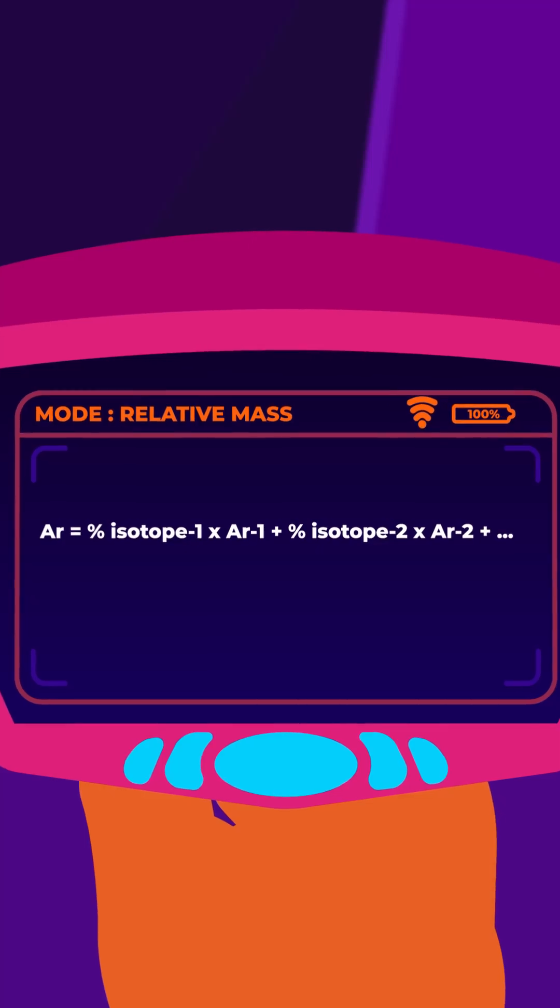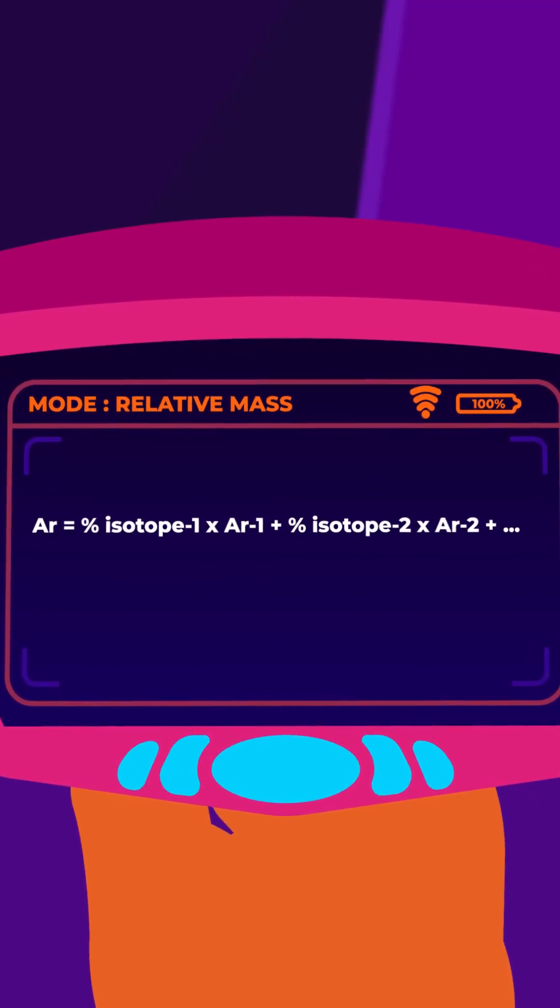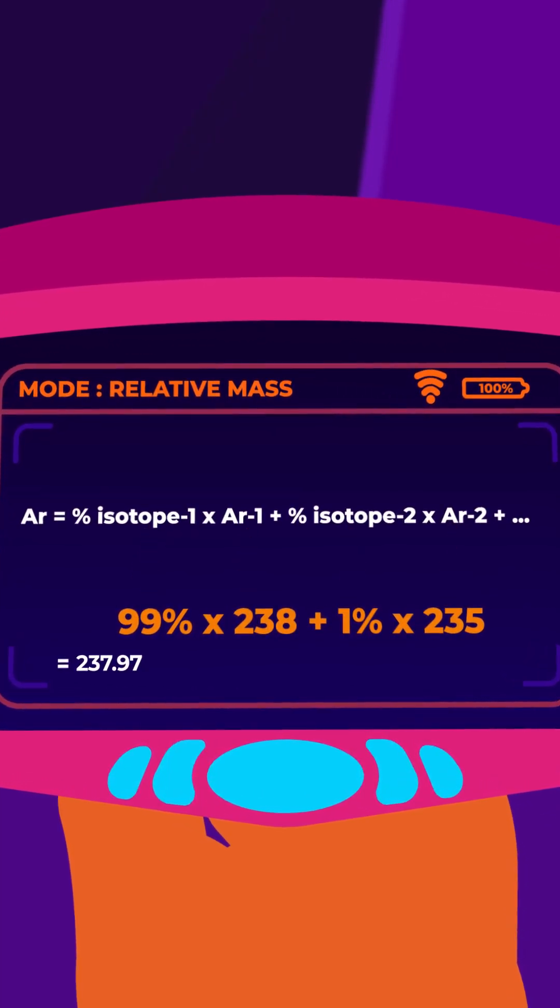Therefore, the relative atomic mass of uranium is calculated by multiplying the relative atomic mass by its abundance and adding the results.